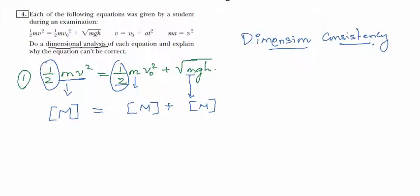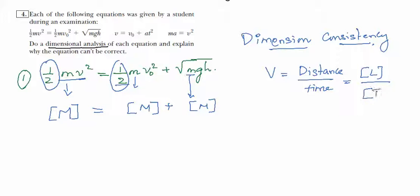Velocity is distance over time, and distance is a length, so the dimension of velocity is length over time — or equivalently, length times T to the power negative one, since bringing time to the numerator changes the sign of its exponent from positive one to negative one.